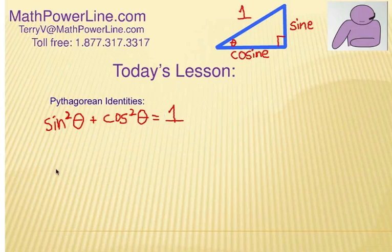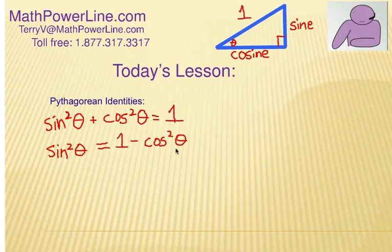Now, it's not always in that format, though. Sometimes, we're going to move things around and manipulate this a little bit. So, for example, let's subtract cosine squared theta from each side. Sine squared theta equals one minus cosine squared theta.